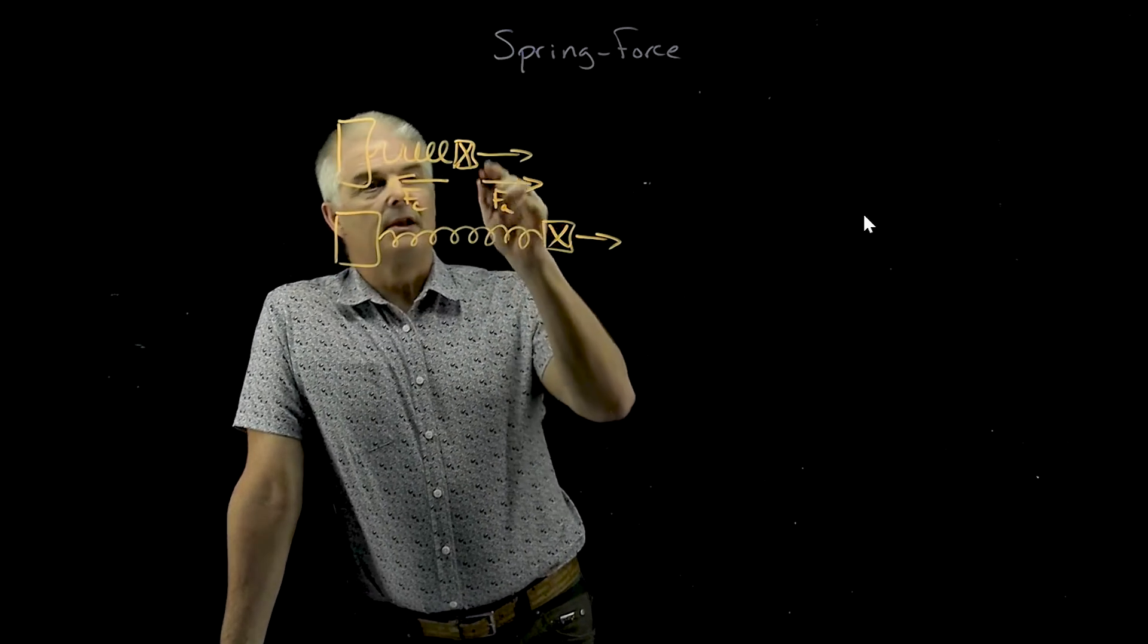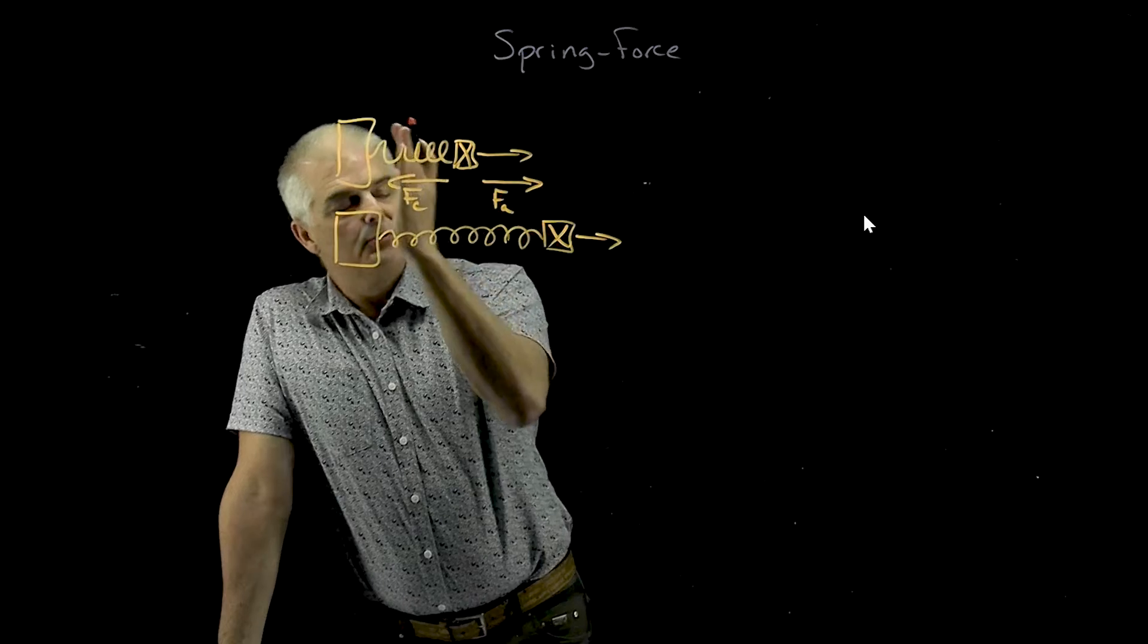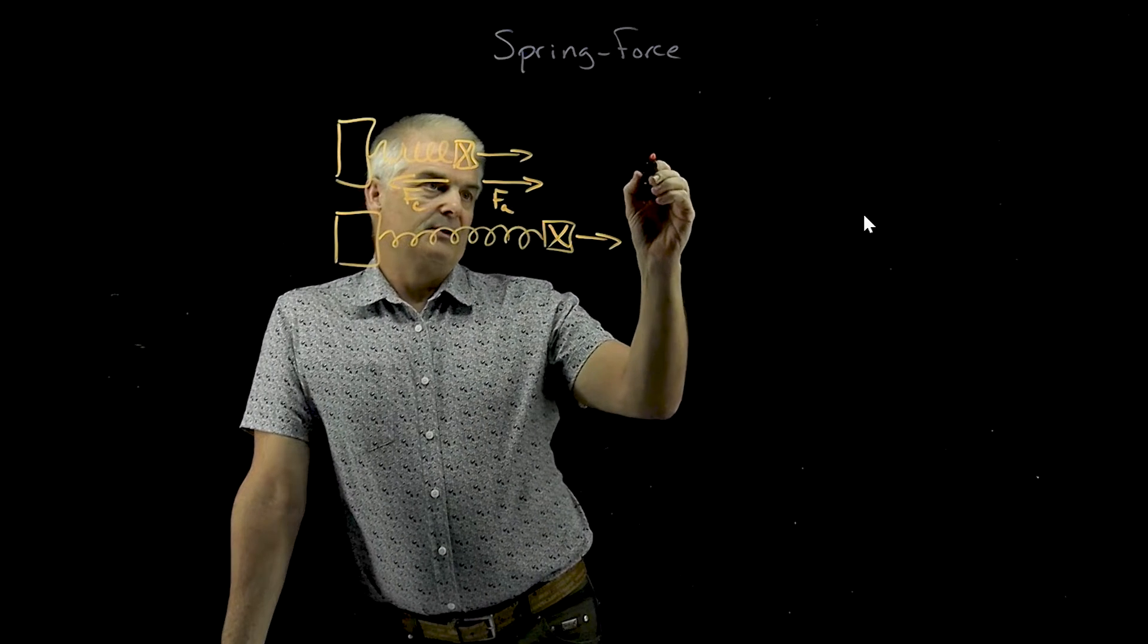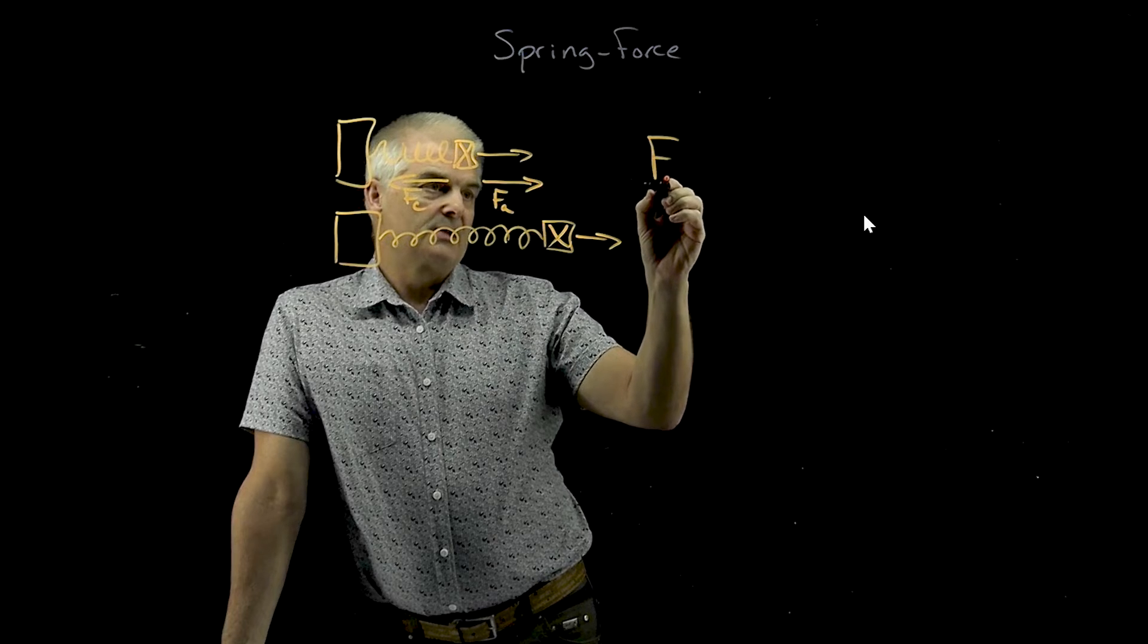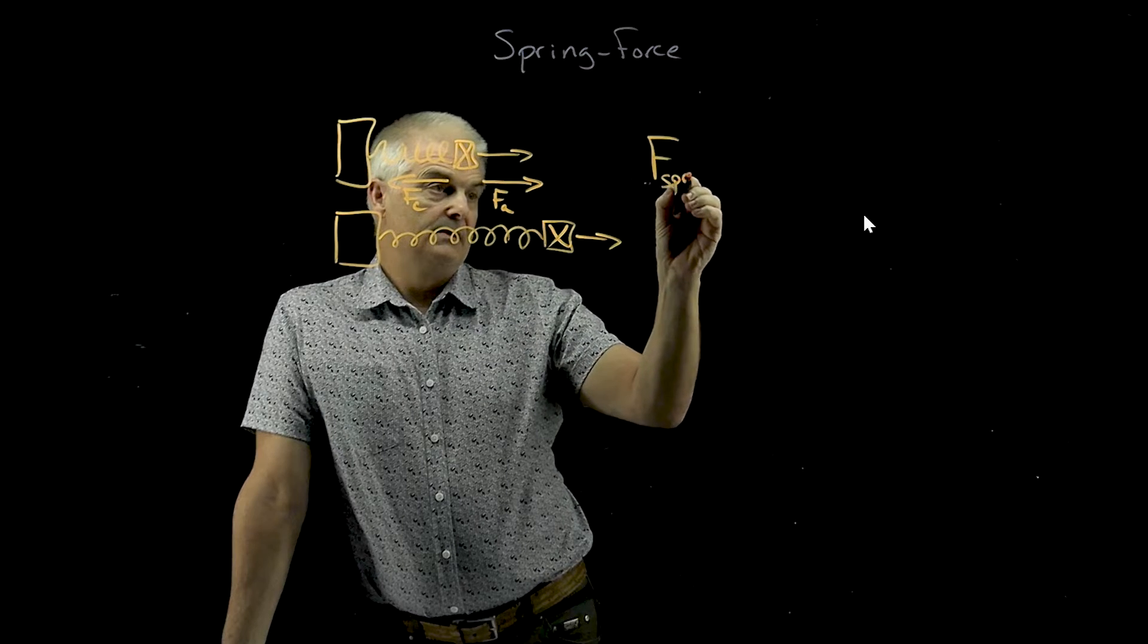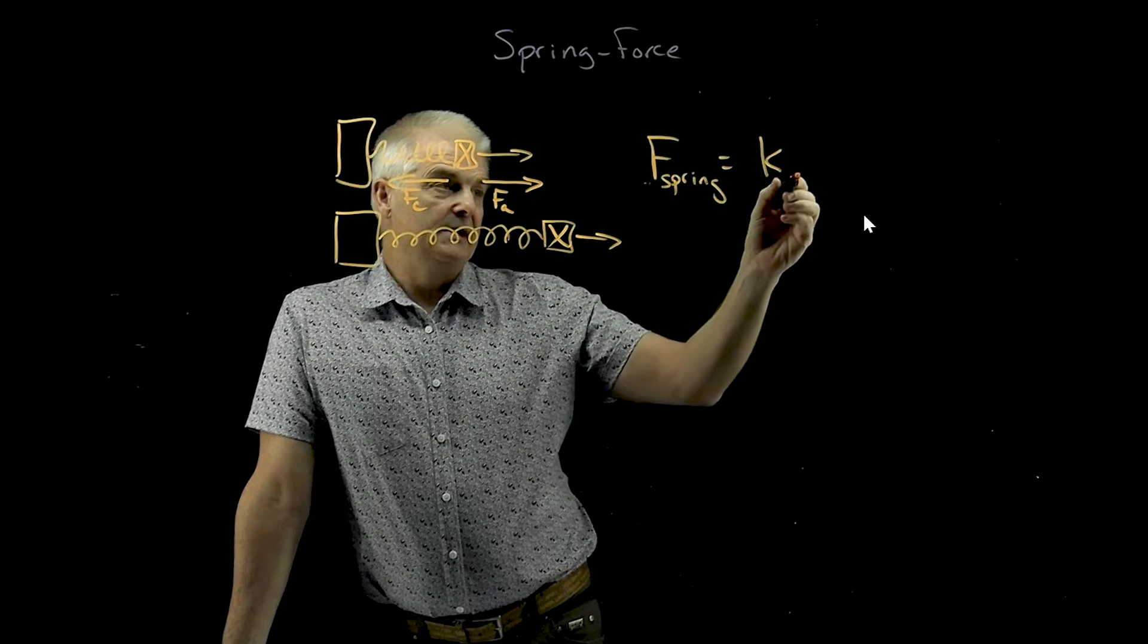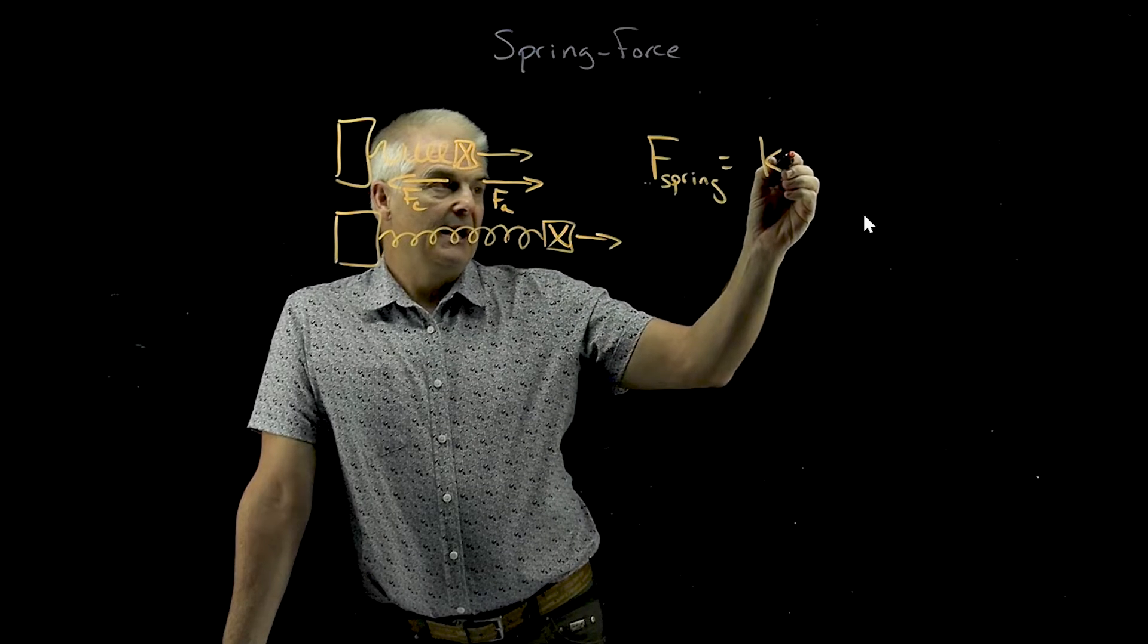And what you can do is you can calculate what that force is. And it turns out that if you were to plot how far you push it back, it follows a linear graph. And we say the force of a spring is equal to some constant K times X.